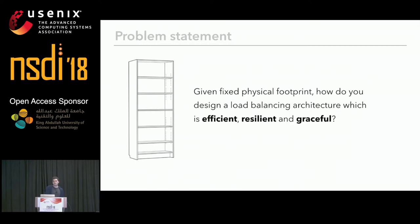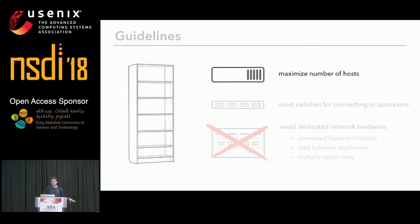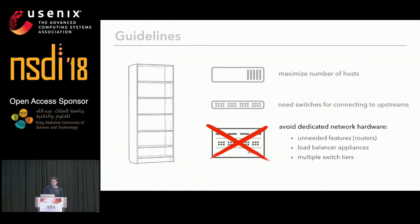The problem statement of the paper is: given a fixed physical footprint, how do you design a load balancing architecture which is efficient, resilient, and graceful? The topology we came up with is pretty simple. To maximize requests per second you maximize the number of hosts. You can't deploy only hosts — you need network equipment for port density, and switches are ruthlessly efficient. Everything else, including load balancer appliances and multiple switch tiers, if you can't justify it in physical space, you don't need it.